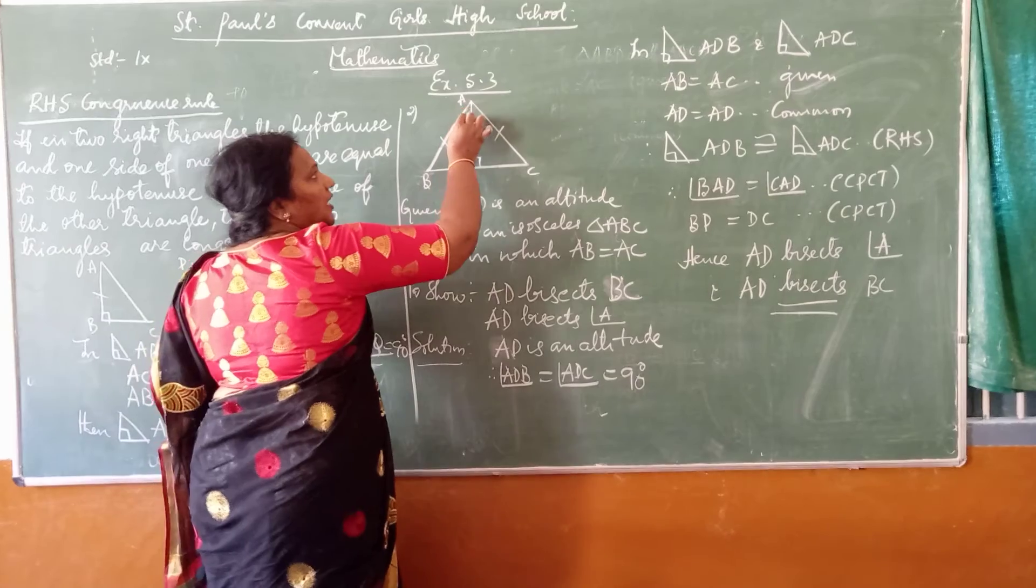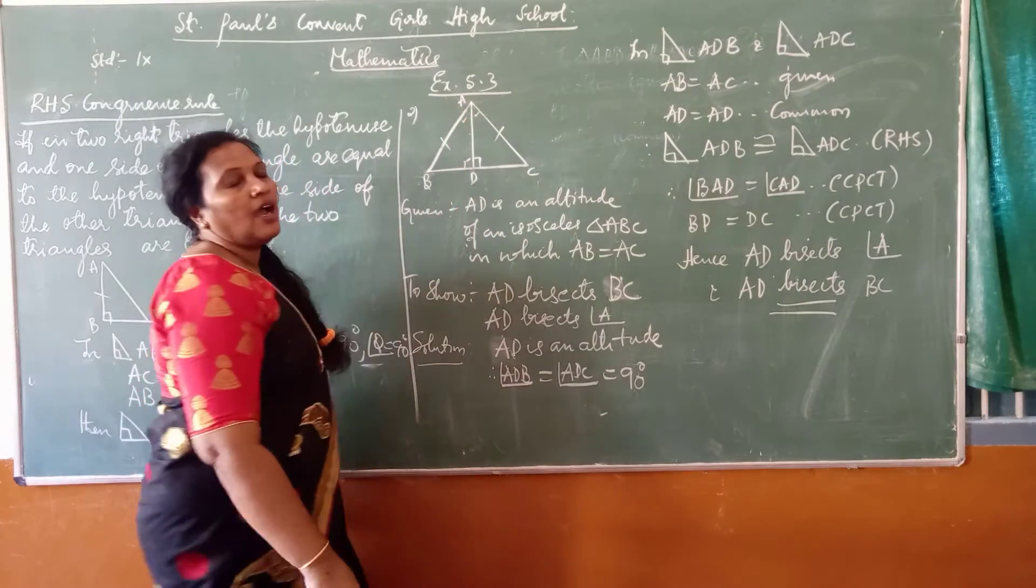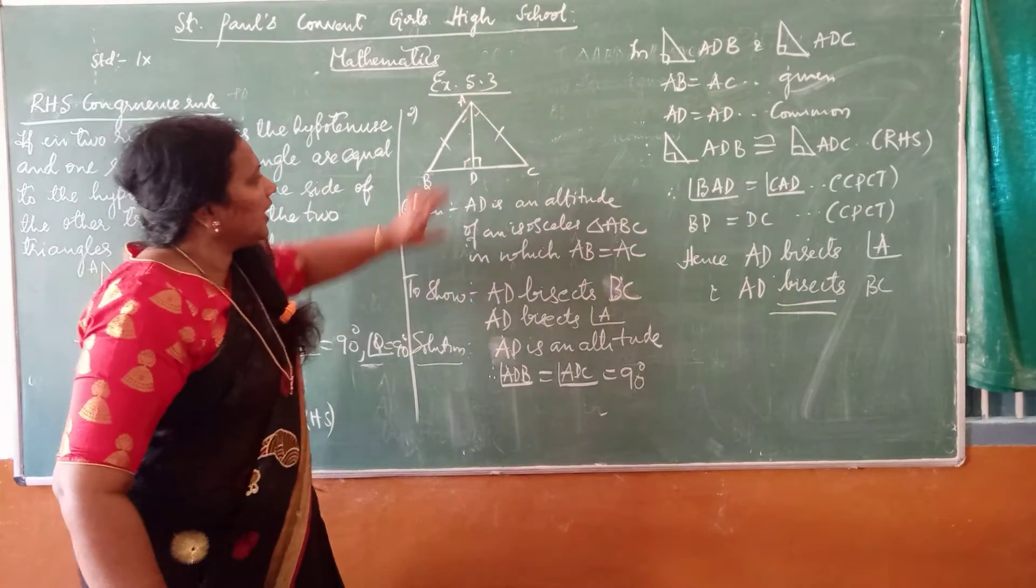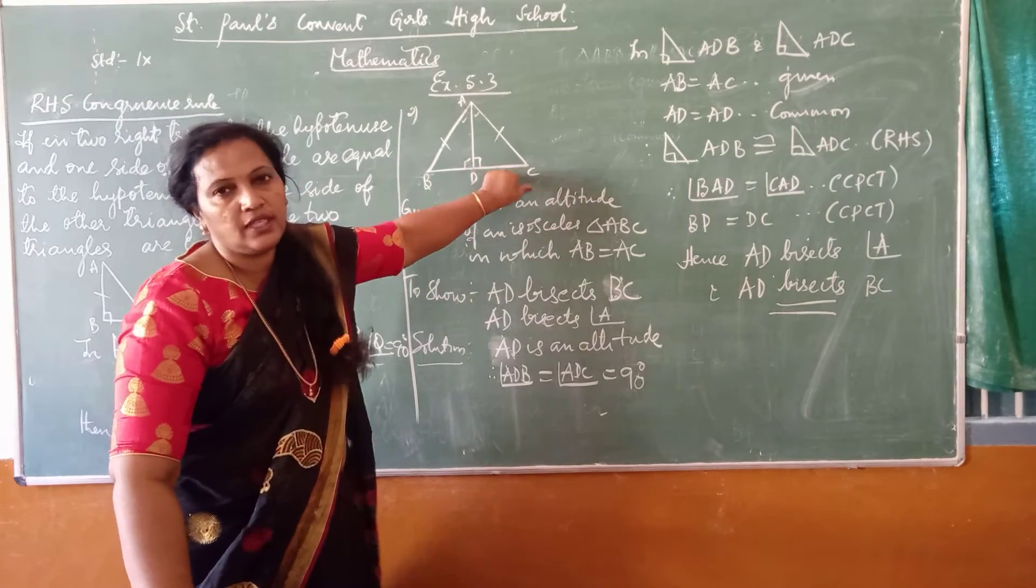AD bisects angle A, I have to show that these two angles are equal. And AD bisects BC means I have to show BD is equal to DC.